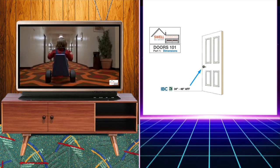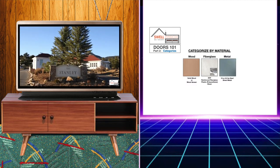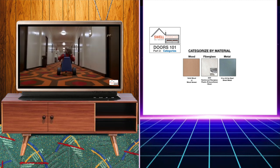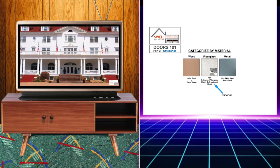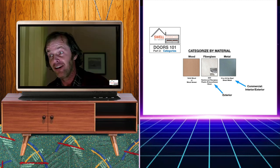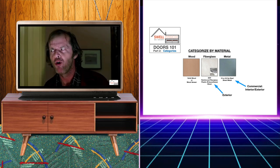Doors are made of wood, fiberglass, or metal. Fiberglass doors are a good option for exterior doors. Metal doors are typically found in commercial properties rather than residential and can be both exterior and interior.